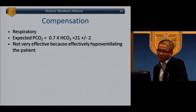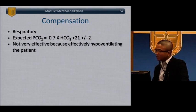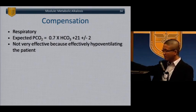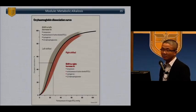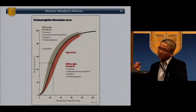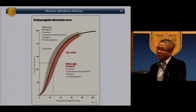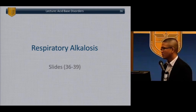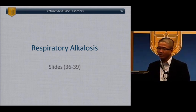Respiratory compensation for metabolic alkalosis is even harder than respiratory compensation for metabolic acidosis — you're telling the patient to hypoventilate, which we can't get patients to do well or for a long time. Metabolic alkalosis shifts the oxygen dissociation curve to the left, holding oxygen tighter — and that's not good. I prefer my patients to be a little acidemic rather than alkalemic. Metabolic alkalosis is an underappreciated entity, particularly in the surgical ICU.